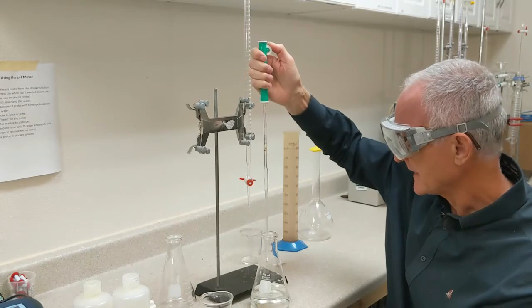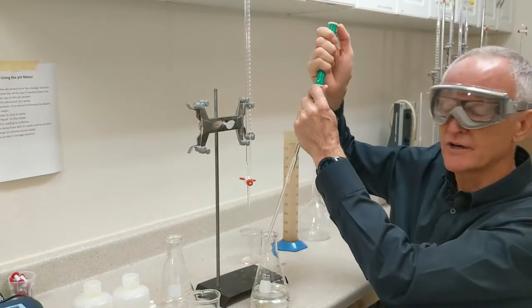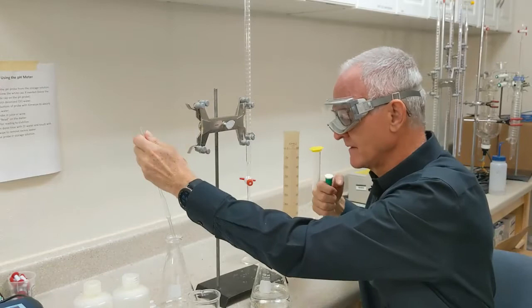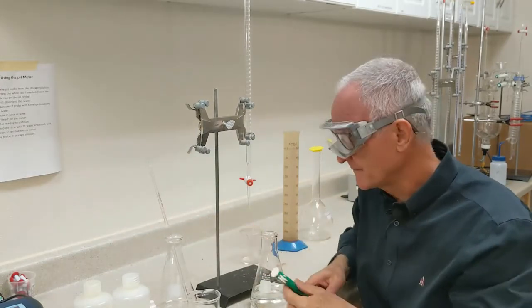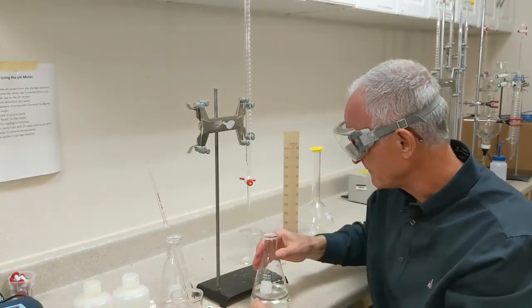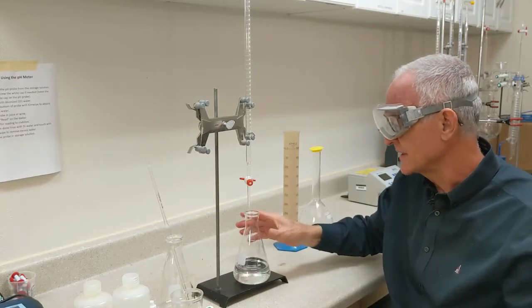I'm going to dispense that into my flask. So now in my flask, I've got 200 mils of water, five drops of phenolphthalein, and five mils of wine. So now I just titrate this.